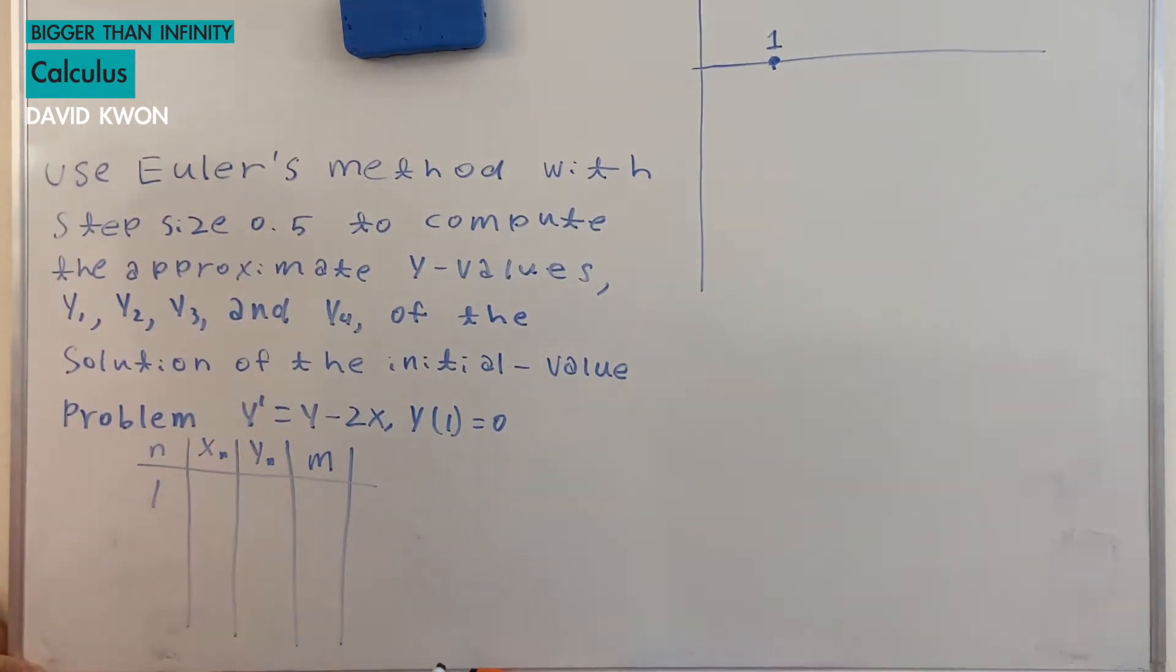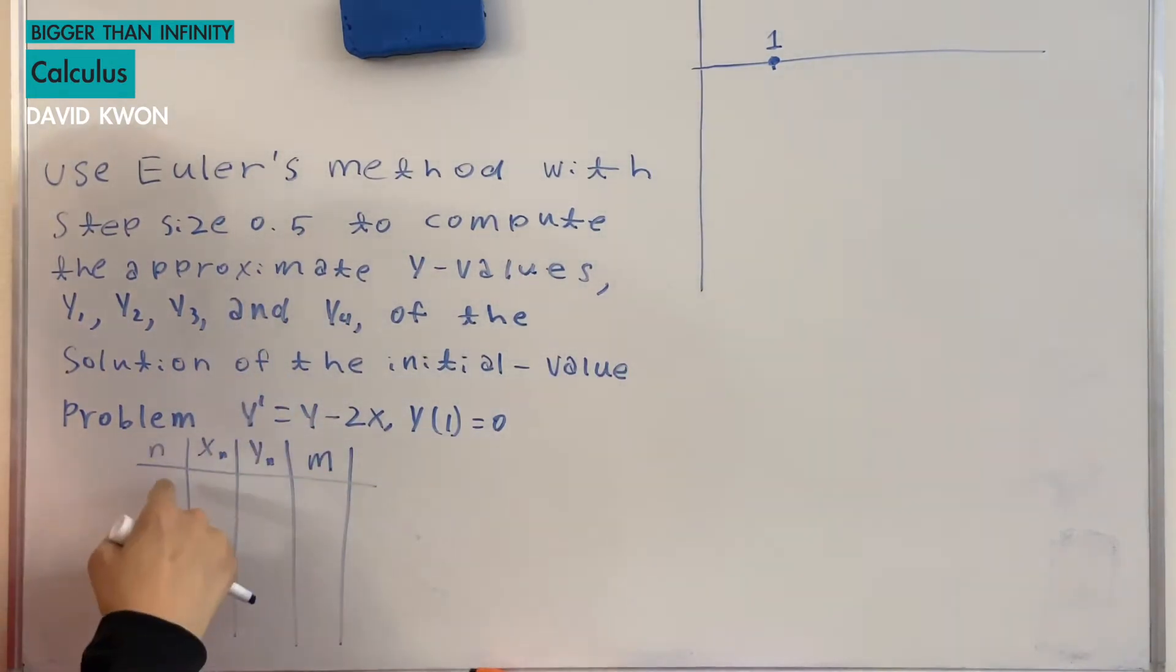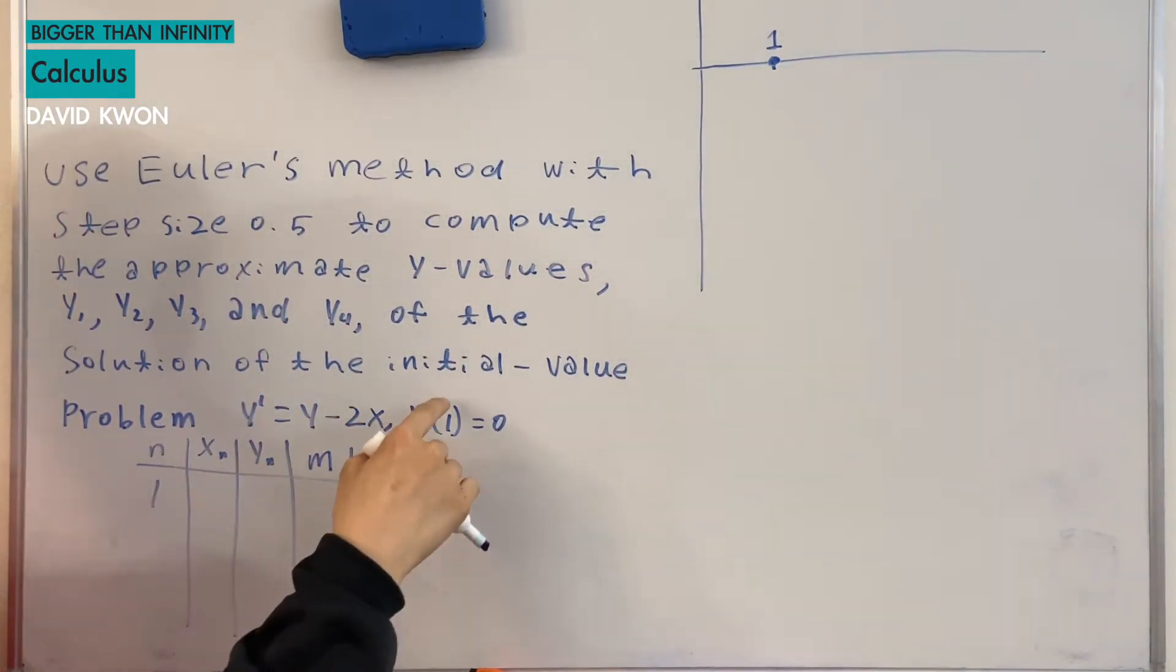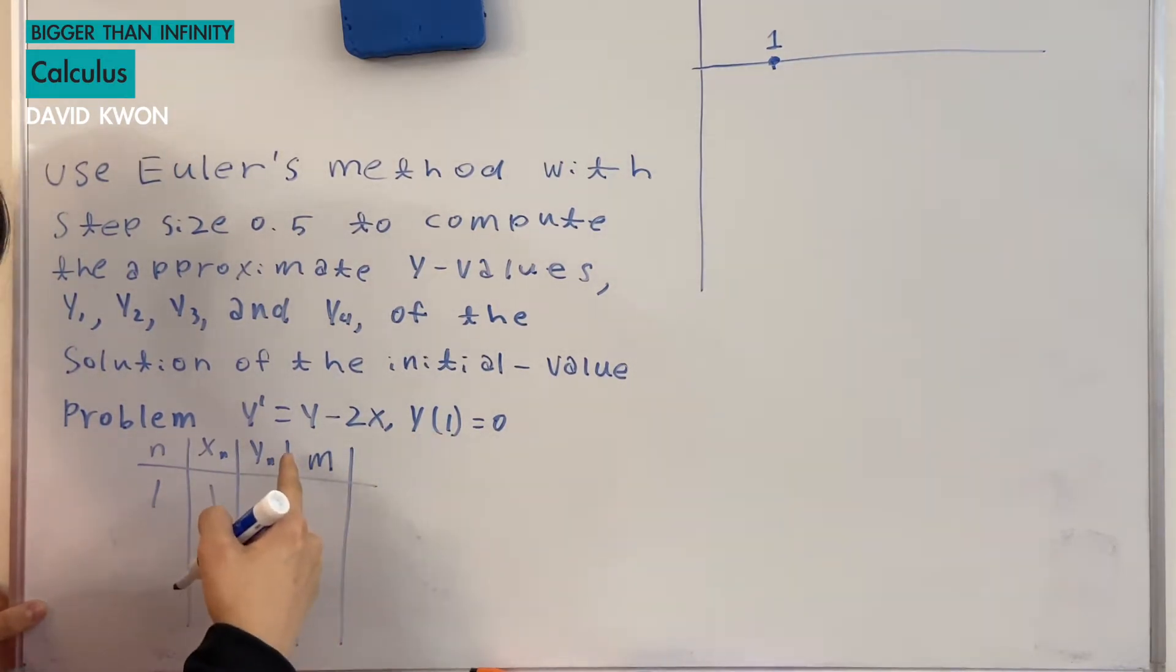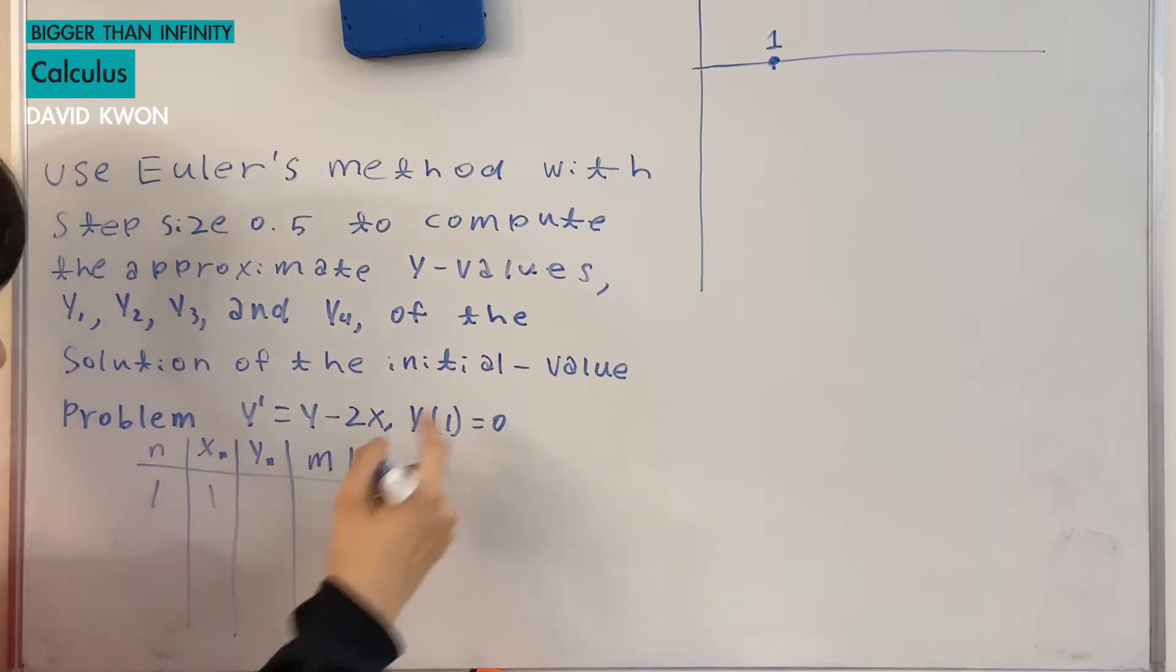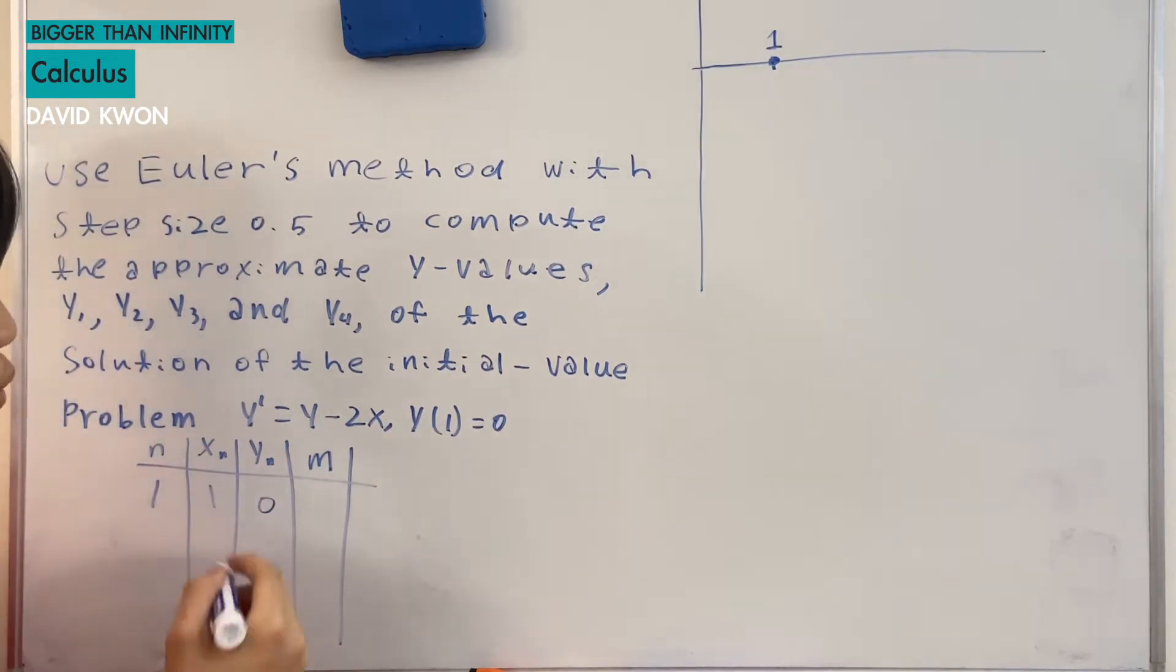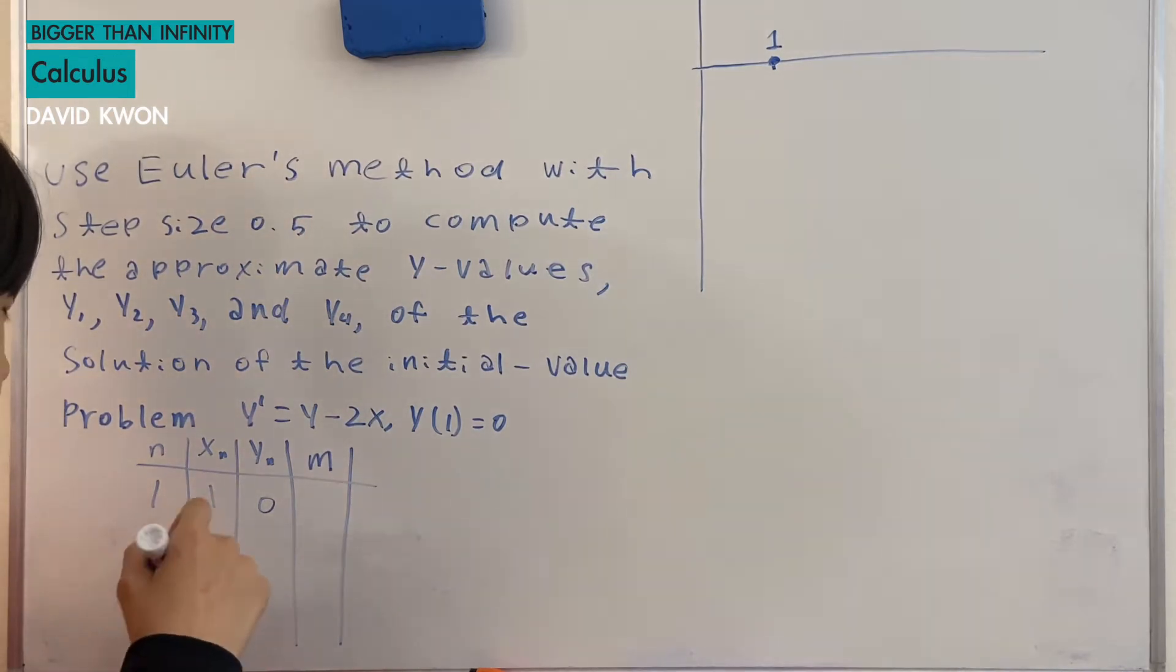So to start off let's have n=1. Okay so x1 what is that? When n is equal to 1 we have x1 as just 1 because x is equal to 1 and the first of y1 would be 0. So what is the slope? How do we find the slope? It's just we substituting the x is equal to 1 and y is equal to 0 onto here.